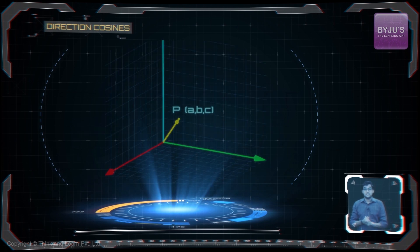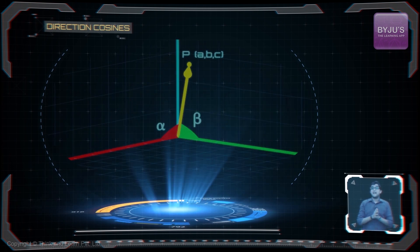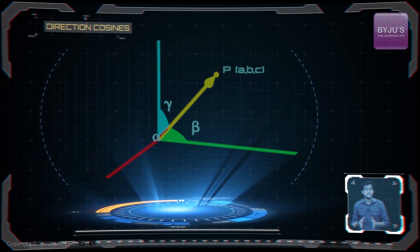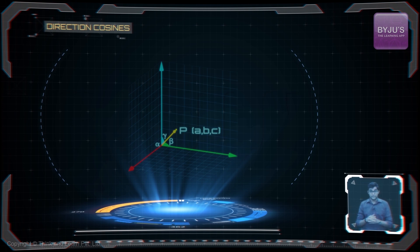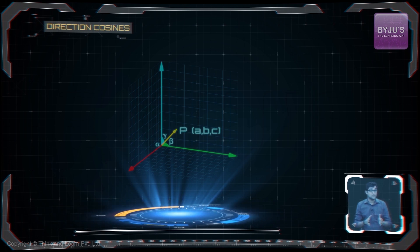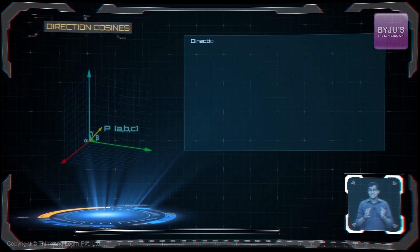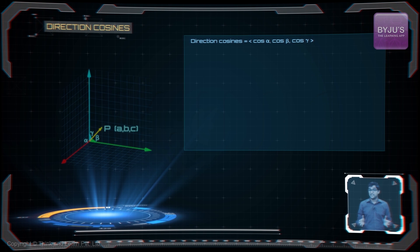As you can see in the figure, if alpha, beta, and gamma are the angles made by the line segment with the coordinate axes, then these angles are termed the direction angles of the directed line segment OP. The cosines of these angles are called the direction cosines of the line. Hence, cos alpha, cos beta, and cos gamma are called direction cosines and are usually denoted by L, M, and N.